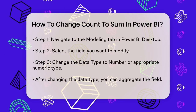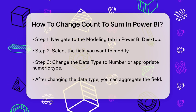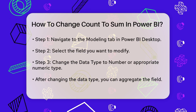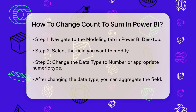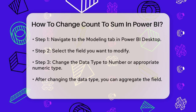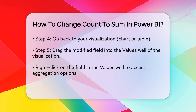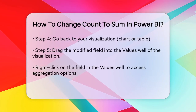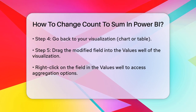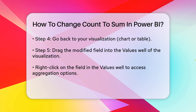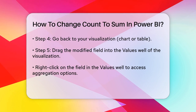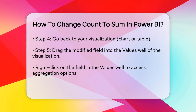Once you've changed the data type, you can now aggregate the field in different ways. Go back to your visualization, such as a chart or table. In the Fields list, find the field you just modified and drag it into the Values Well of your visualization. Right-click on the field in the Values Well and select the drop-down arrow. Here, you'll see various aggregation options like Sum, Average, Minimum, Maximum, and Count. Choose Sum if that's what you need.